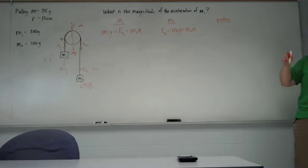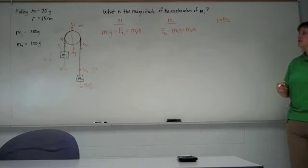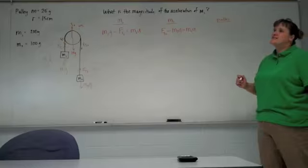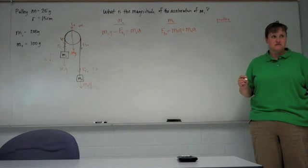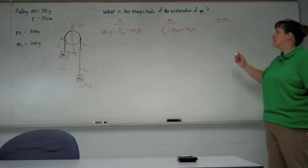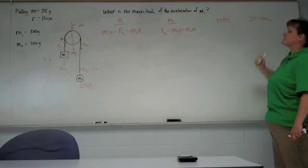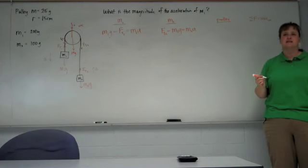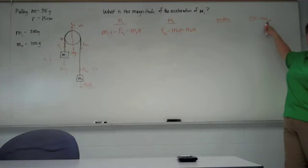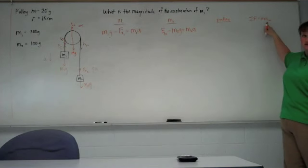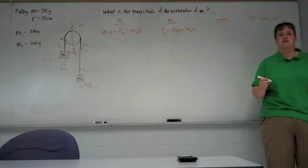Now the pulley is going to rotate. That rope, that string is going to make the pulley rotate as the masses move. We can't use F equals ma for pulleys. This equation is perfectly valid but it will tell you the acceleration of the center of mass. What is the acceleration of the center of mass? Zero.